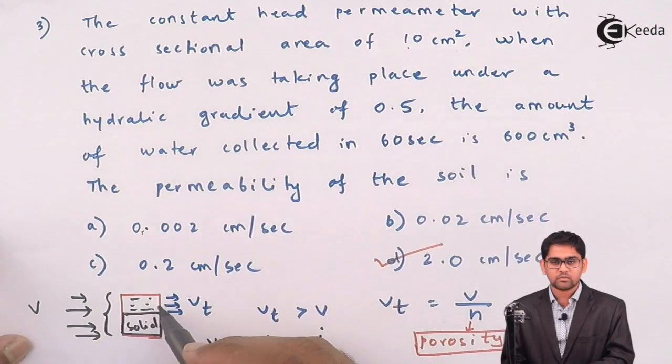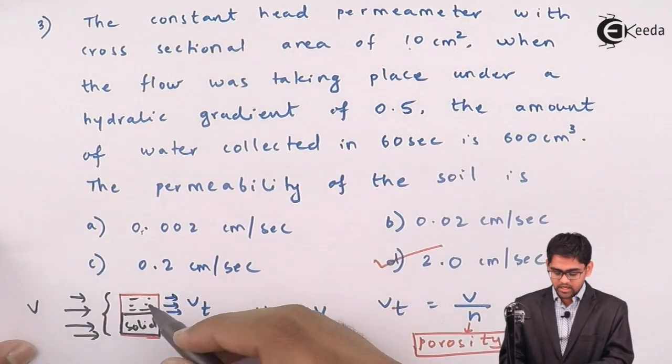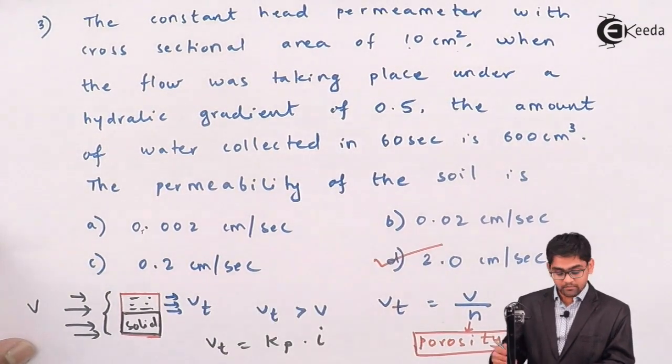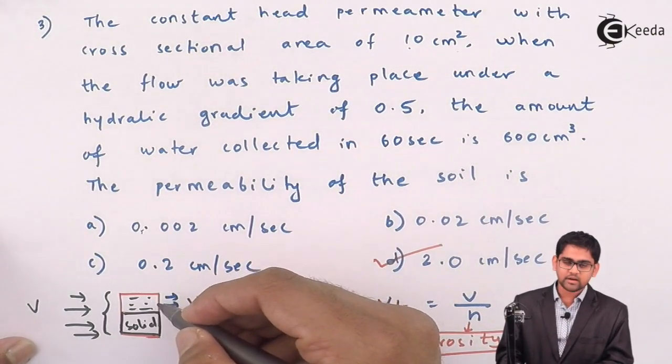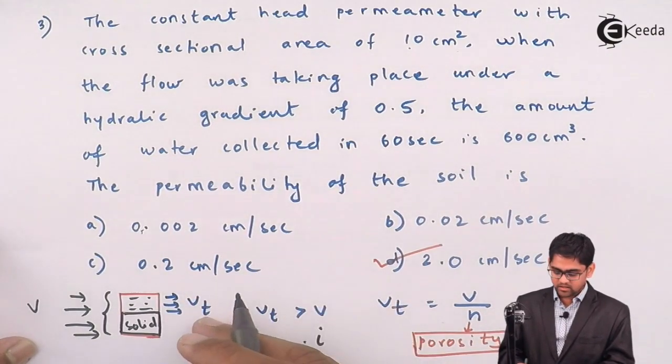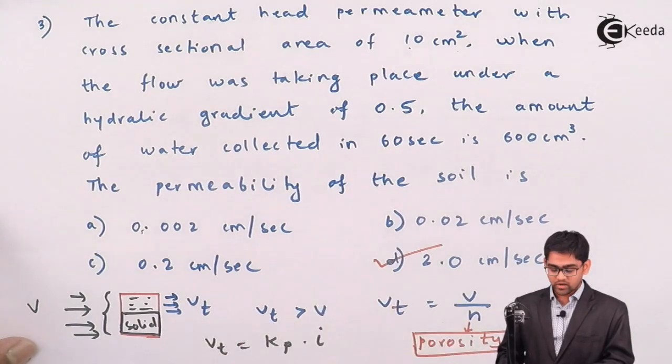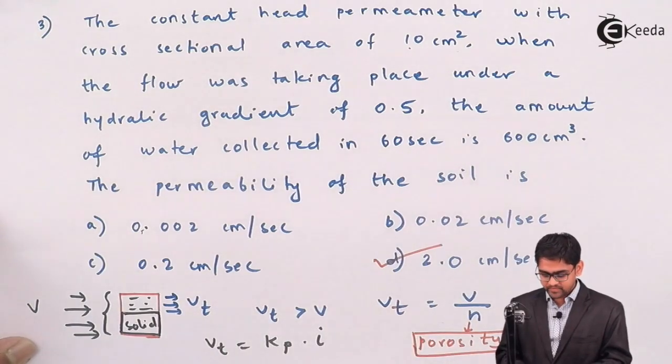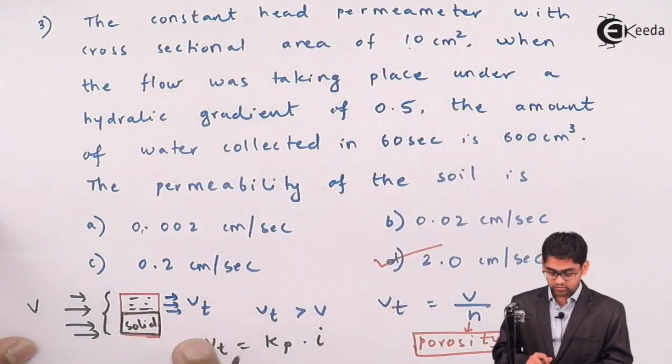And if it is occurring only through pores, then you need to probably take the volume of the pores or probably the cross-sectional area at the pore end. Because of this area reduction, you may get higher velocity which is occurring through the soil pores.